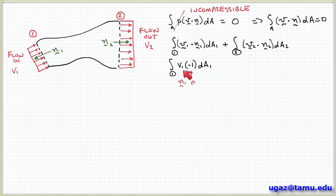And notice that for surface one, the velocity V1 is in the opposite direction as the normal vector. So the flow is coming into the control volume, and the normal vector is pointing outward. So they have opposite sign. The normal vector points in the opposite direction of the velocity.